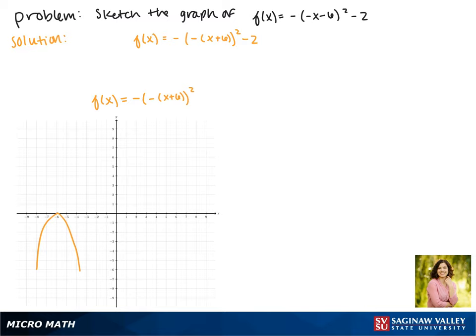Now on to our vertical translation. Because we are subtracting 2 on the outside, this shifts our function down two spaces.